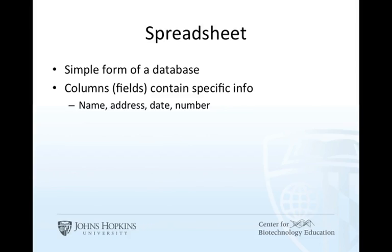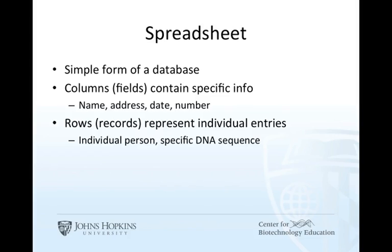Fields are usually specific for certain types of data. For instance, a date field might be set up in a desired format, like month/day/year. We can then call the rows records, sometimes known as entries — essentially the terms are synonymous for this purpose. A record might be an individual person in a directory, or it might be a DNA sequence in a biological database.